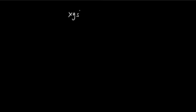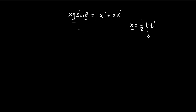So we have ẋ² + x·ẍ. The trick is to let our solution be x = ½kt². Here k is some constant that will be a function of g and theta, since those are the only constants in the equation. By comparing units, we know there must be a t-squared term multiplied by k, so by necessity our solution is going to look like this.